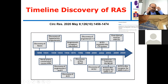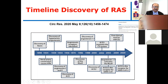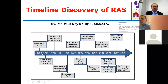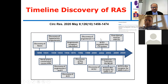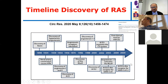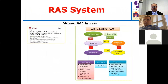Starting from the early 1980s, the discovery of renin dates back to 1898 — over a century ago. Then came the discovery of angiotensin in 1939. And here we are, living in the era of COVID-19, where we now know that angiotensin-converting enzyme isotype 2 (ACE2) is the receptor for COVID-19 cell entry.